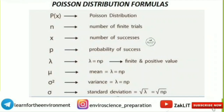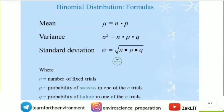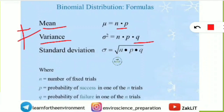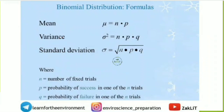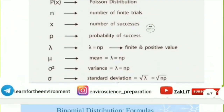For the Binomial distribution, it is a little different from Poisson distribution. Mean is the same: N multiplied by P. However, variance is not equal to mean — variance equals N × P × Q, where Q is the probability of failure. Standard deviation equals the square root of NPQ. So both binomial and Poisson distributions are very important and frequently asked from statistics — you should note down all these things.